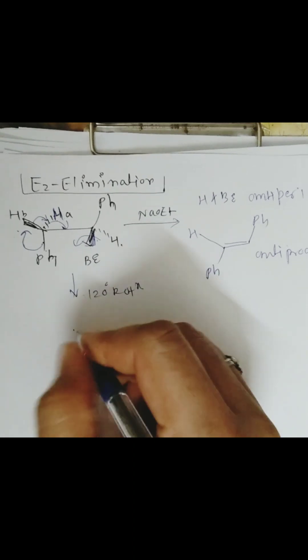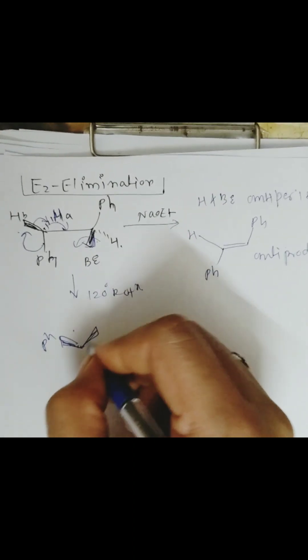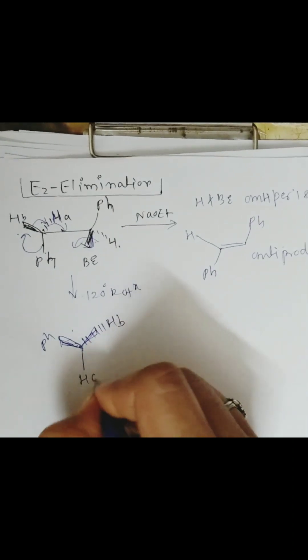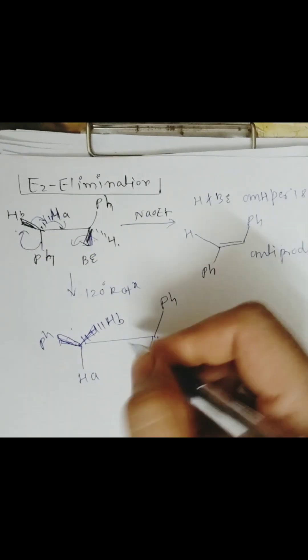In this case, Ha will be above and hydrogen Hb below, and in the plane there will be Hb hydrogen. Here the bromine is above the plane and hydrogen below the plane.